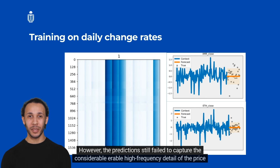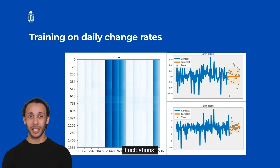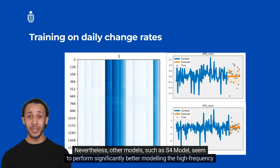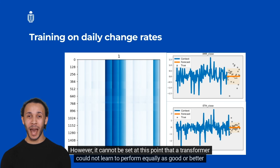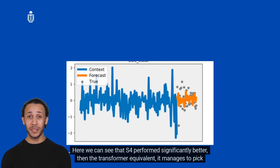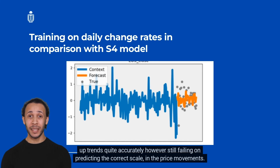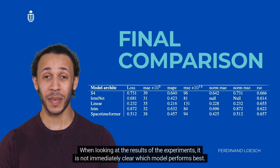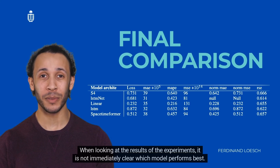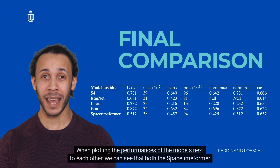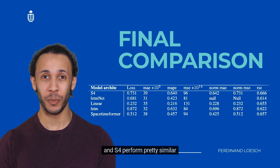The predictions still failed to capture the high-frequency detail of price fluctuations. Nevertheless, other models such as S4 seem to perform significantly better at modeling high-frequency data from a small amount of data. However, it cannot be said at this point that a transformer could not learn to perform equally well or better when exposed to large amounts of data. The S4 model managed to pick up trends quite accurately, though still failing to predict the correct scale of price movements.